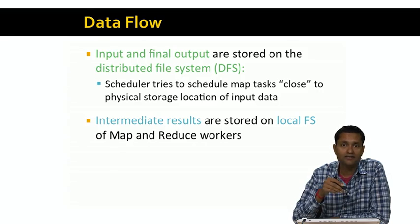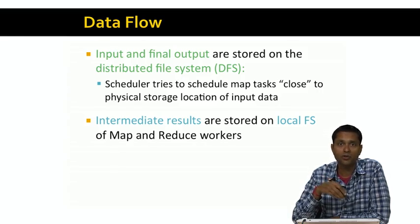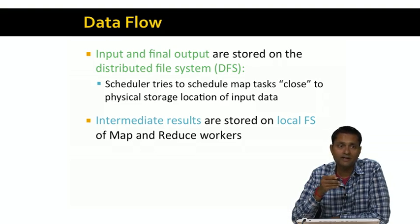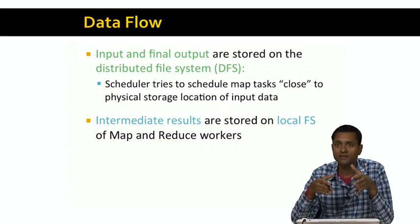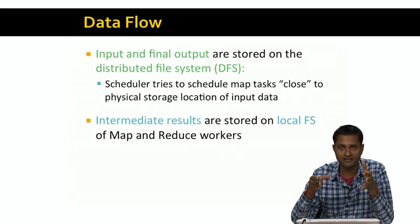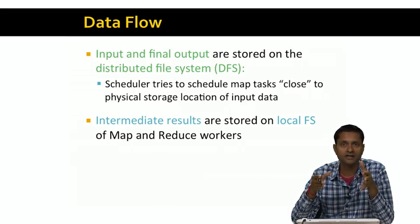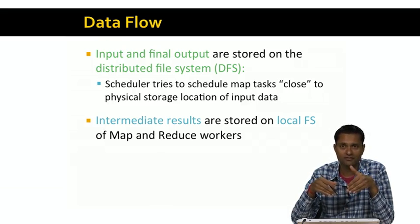The intermediate results are not stored in the distributed file system, but stored in the local file system of the MapReduce workers. Intermediate results could be the output of a map step, or something emitted while in the process of computing a reduce. Why are such intermediate results not stored in the distributed file system? There's some overhead to storing data in the distributed file system — there are multiple replicas that need to be made, involving a lot of copying and network shuffling. So whenever possible, intermediate results are stored in the local file system of the MapReduce workers instead, to avoid more network traffic.